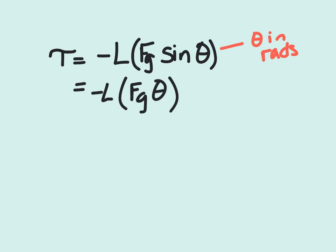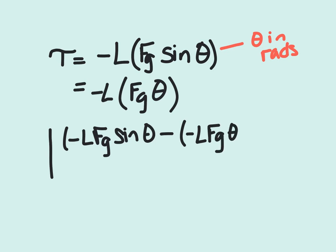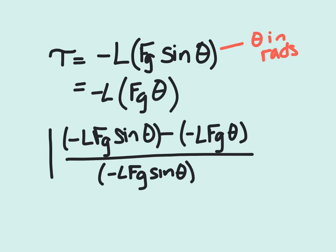We're going to take the percent difference in an absolute value. So we'll have absolute value negative length force of gravity sine theta minus the negative length force of gravity theta, all divided by negative length force of gravity sine theta again.